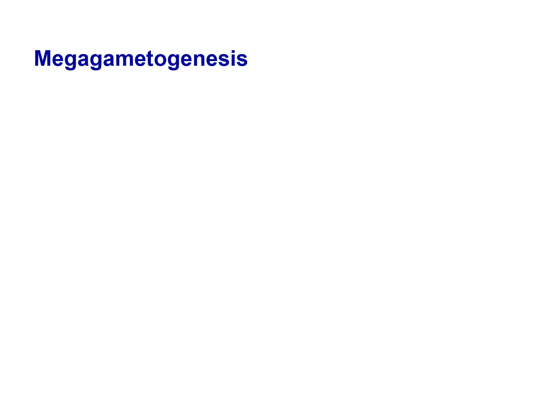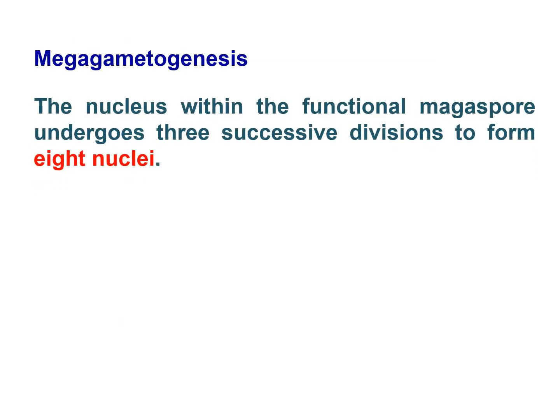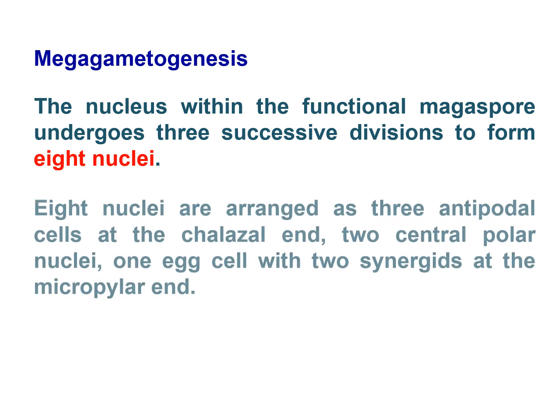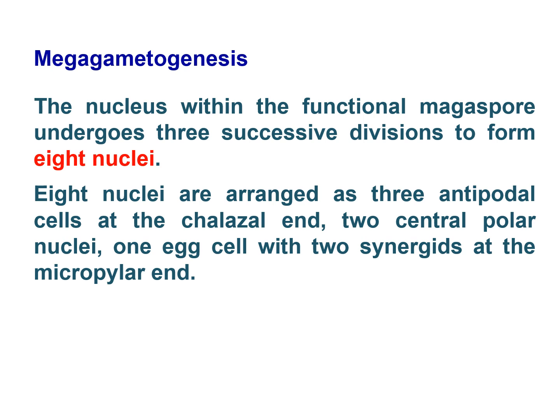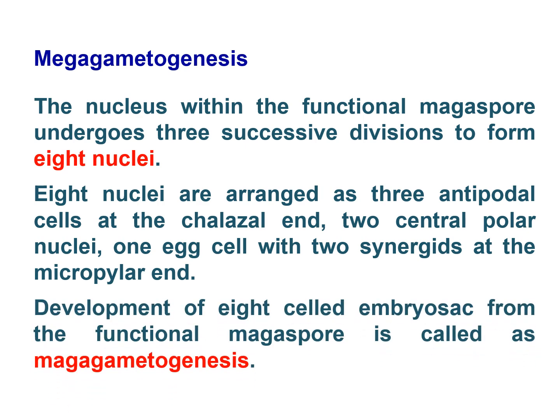Megagametogenesis: The nucleus within the functional megaspore undergoes three successive divisions to form eight nuclei. These eight nuclei are arranged as: three antipodal cells at the chalazal end, two central polar nuclei, and one egg cell with two synergids at the micropylar end. The development of the eight-celled embryo sac from the functional megaspore is called megagametogenesis.